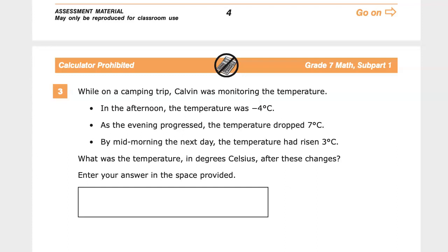In the afternoon, the temperature was negative 4 degrees Celsius, which is around 24 degrees, somewhere in there for Fahrenheit folks. As the evening progressed, the temperature dropped 7 degrees. By mid-morning the next day, the temperature had risen 3 degrees Celsius. What was the temperature in degrees Celsius after these changes? You can enter your answer in the space provided.